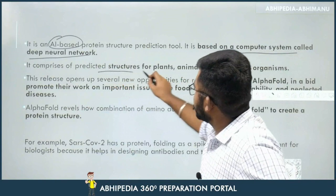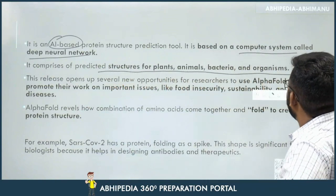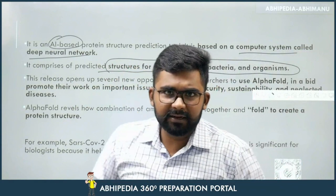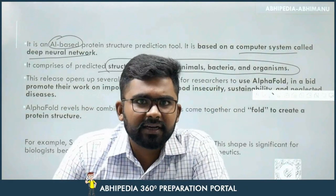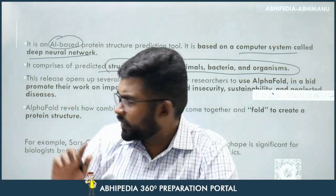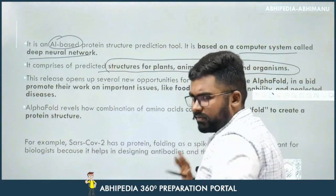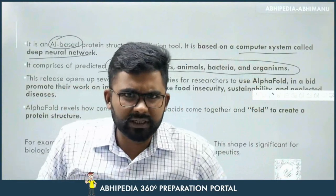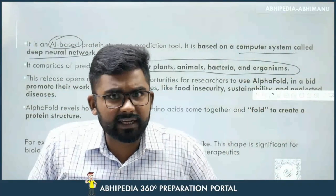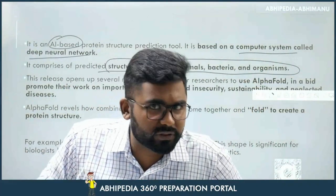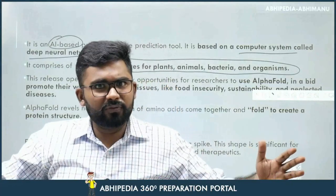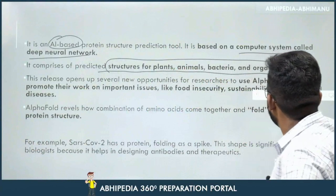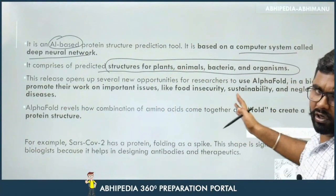AlphaFold predicts structures for plants, animals, bacteria, and other organisms. It is not limited to viruses or any particular organism — a wide range of organisms are covered. So if a statement says it covers bacteria but not viruses, that statement is false. It covers almost all organisms — we have seen the number of 200 million.